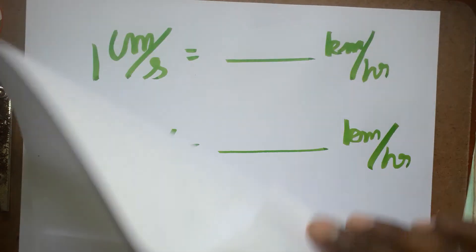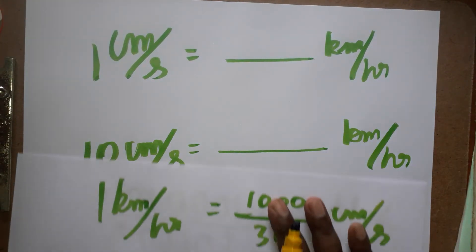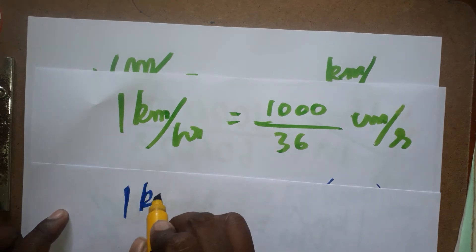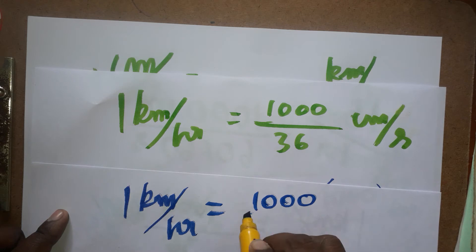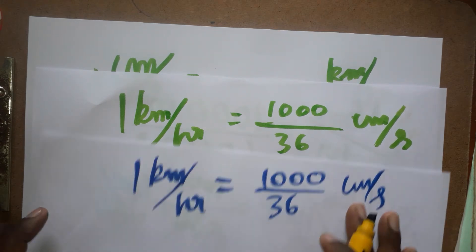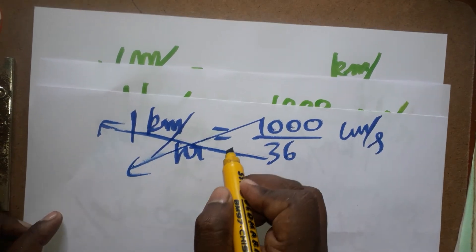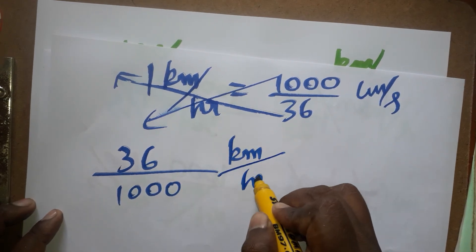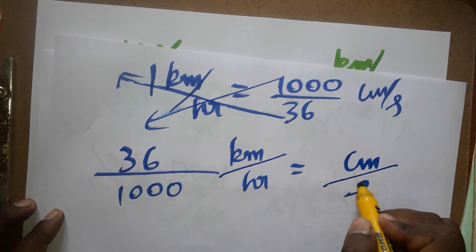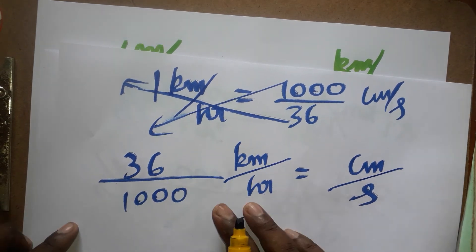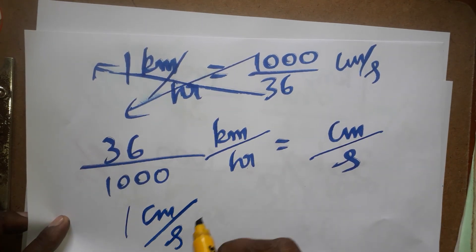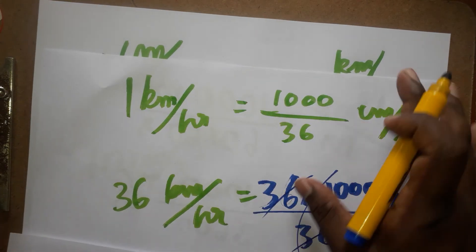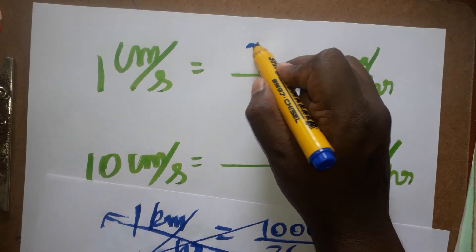Next, we convert centimeter per second to kilometer per hour. From the previous result: 1 kilometer per hour is equal to 1000 divided by 36 centimeter per second. By cross multiplication, I bring 36 to one side and 1000 as the denominator. So 36 divided by 1000 kilometer per hour is equal to 1 centimeter per second. Therefore, 1 centimeter per second is equal to 36 divided by 1000 kilometer per hour.